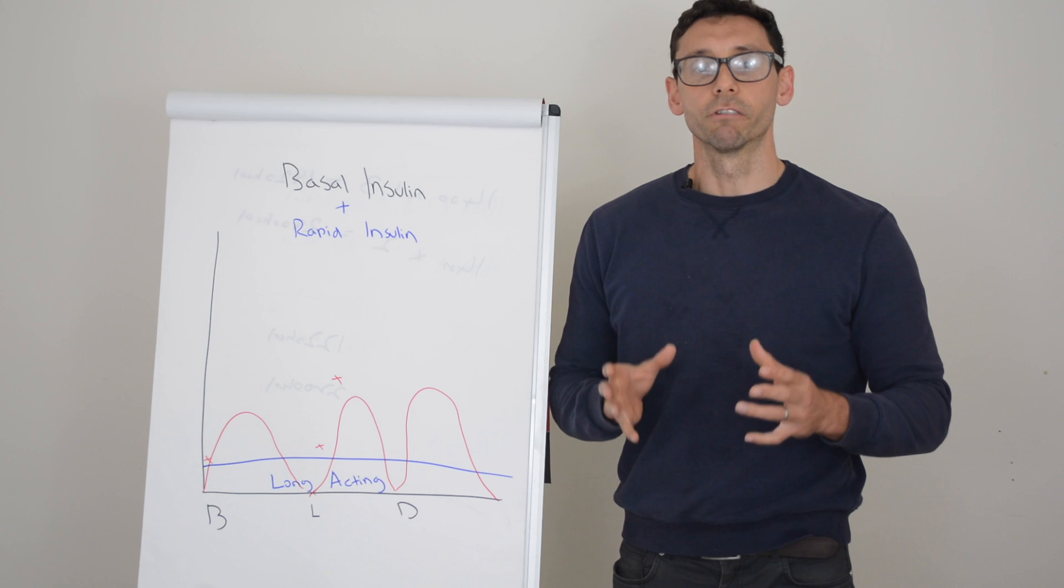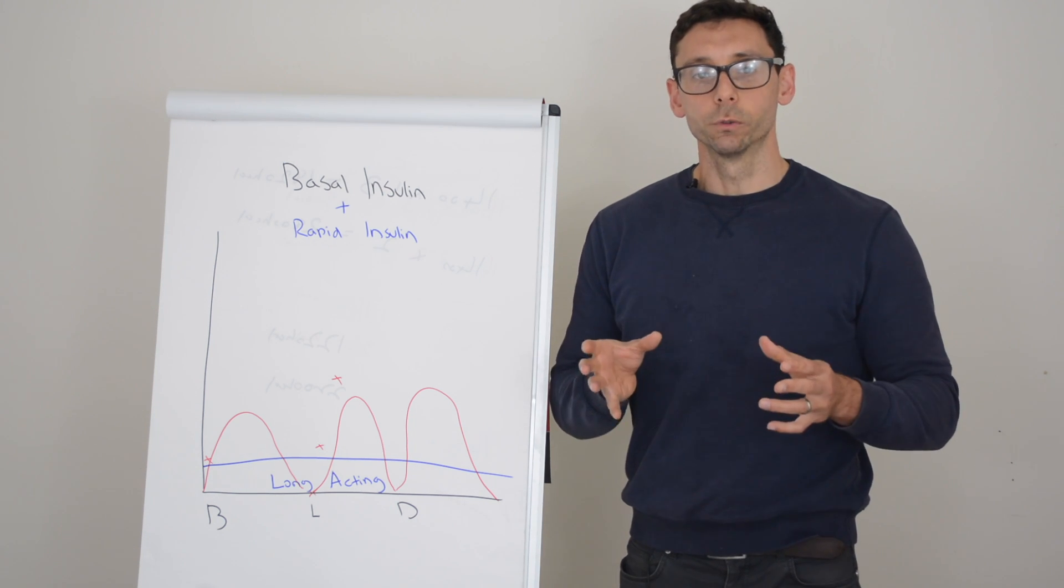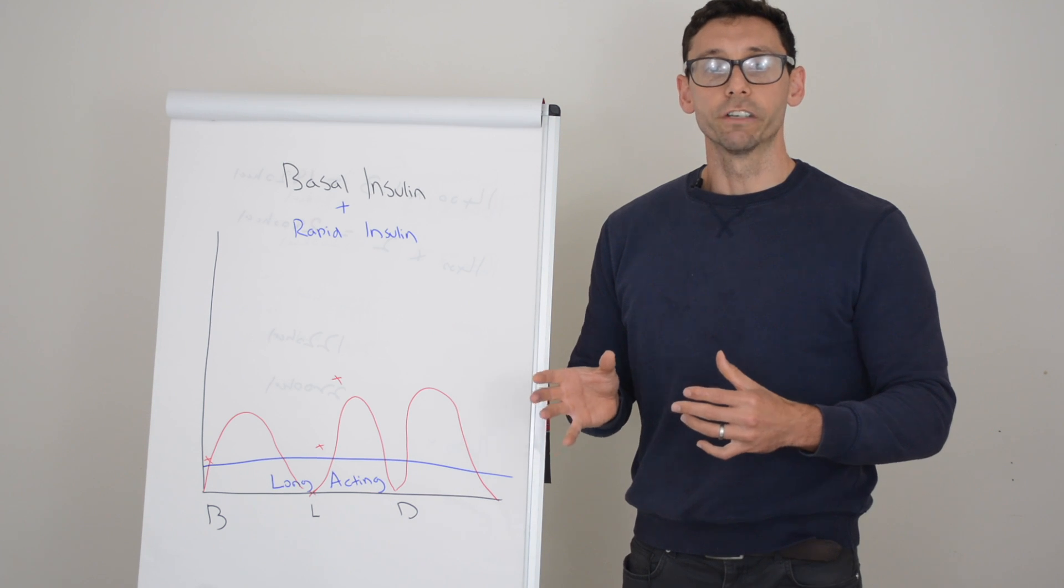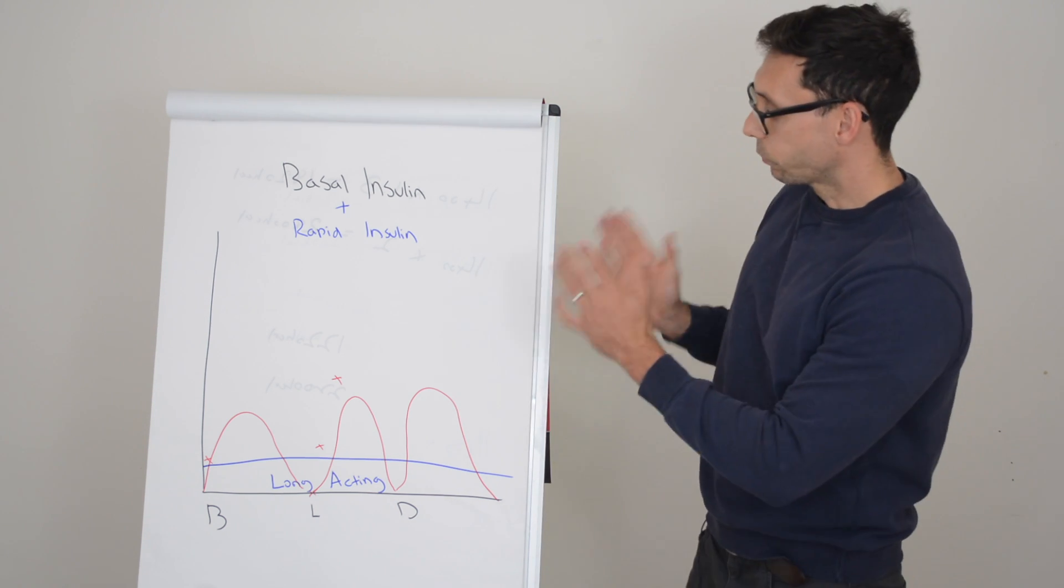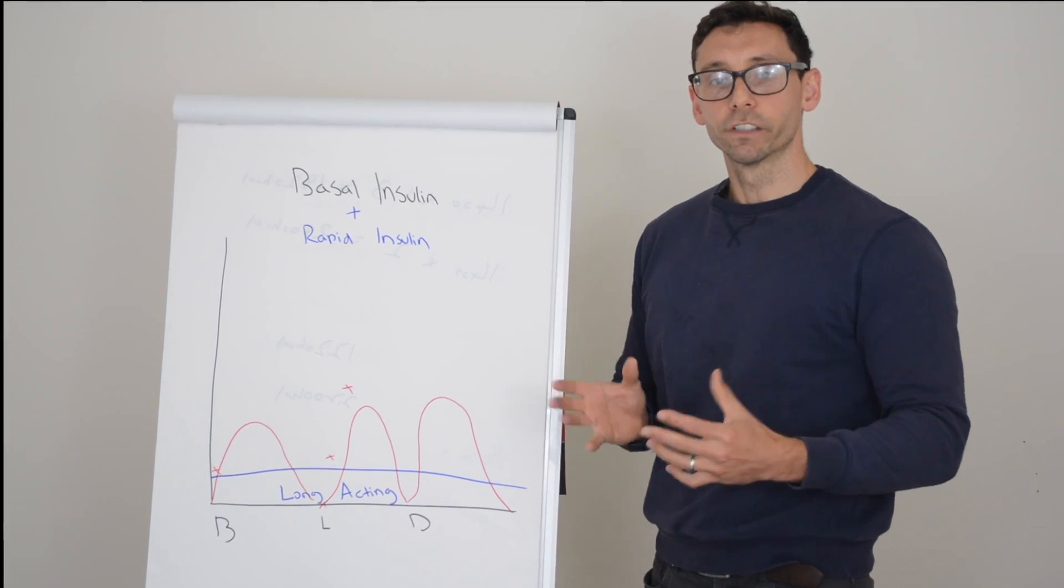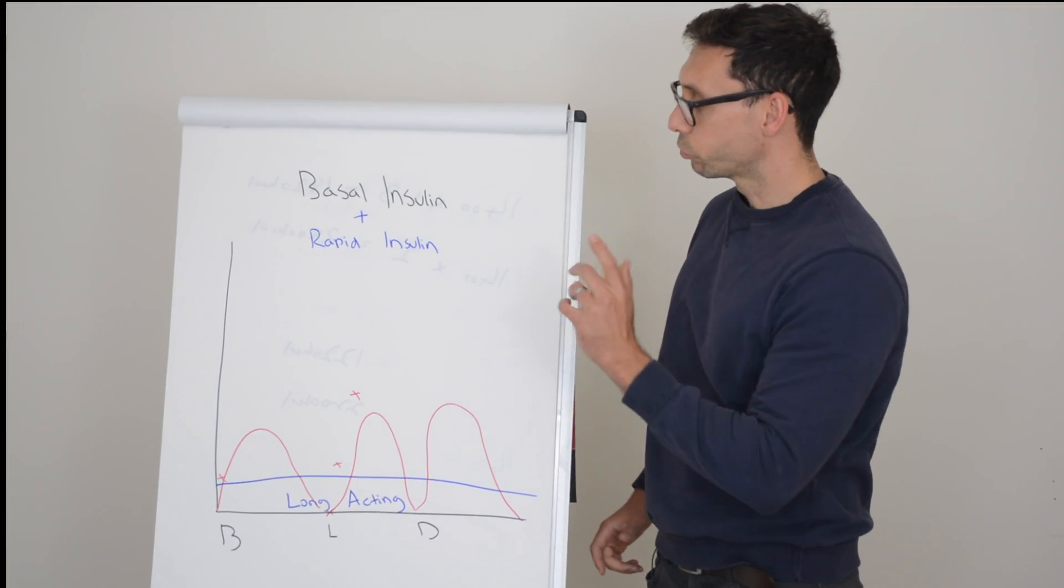Typically speaking, rapid acting insulins will be taken with meals or when you have any significant amount of carbohydrates throughout the day. It's usually taken as part of something called a basal bolus regimen.